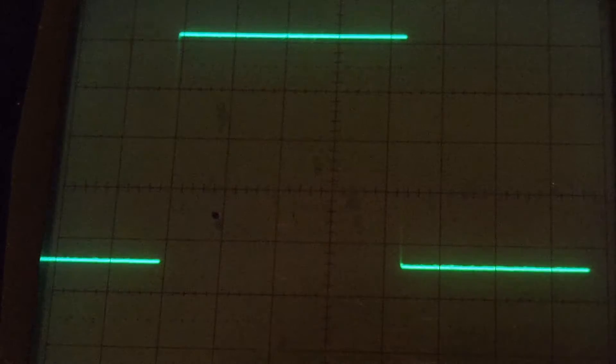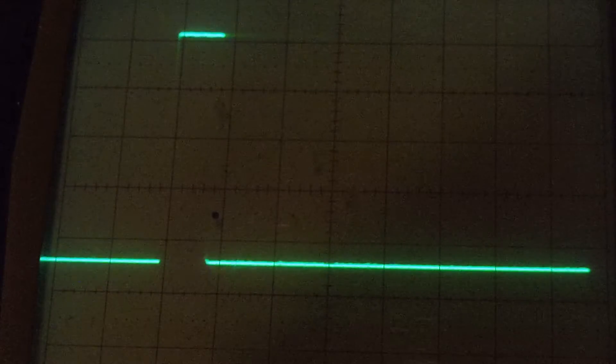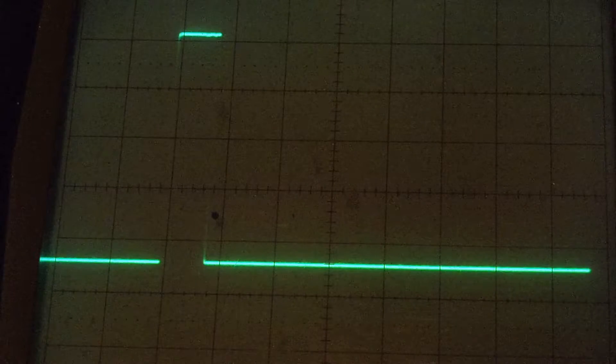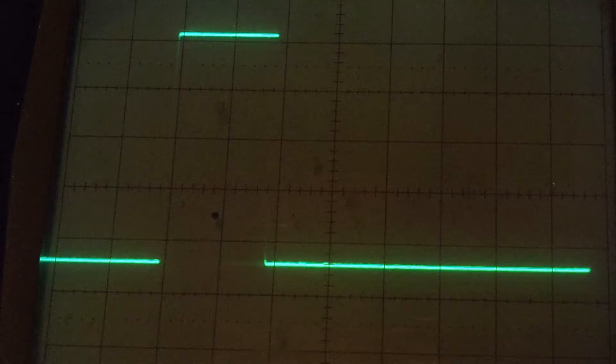Now if I take the pulse width down, if I narrow it down with the keyboard, and bring it down to about a half a millisecond, that will bring the servo motor to its minus 90 degree position. That will be all the way over counterclockwise. Now if I bump it up to about one and a half milliseconds, that will bring it to its zero degree center position.